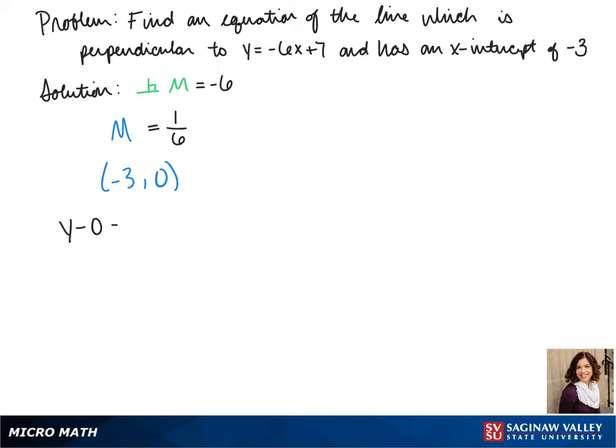We can take our slope and our point and plug it into the point slope formula. So we get y minus 0 equals 1 sixth times x plus 3.